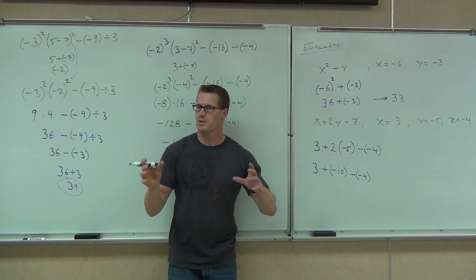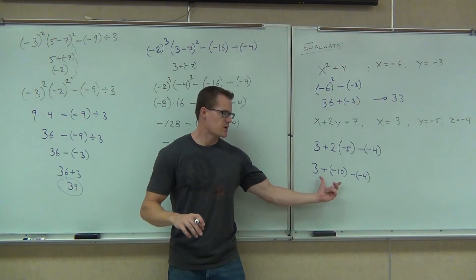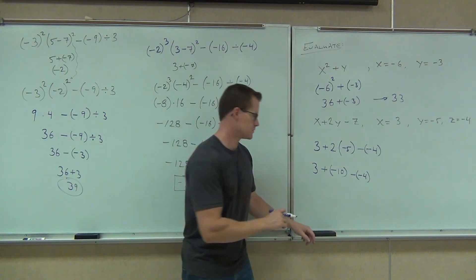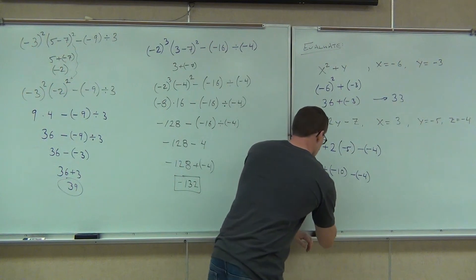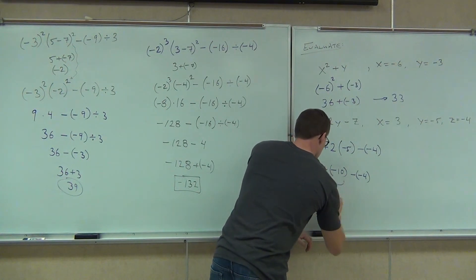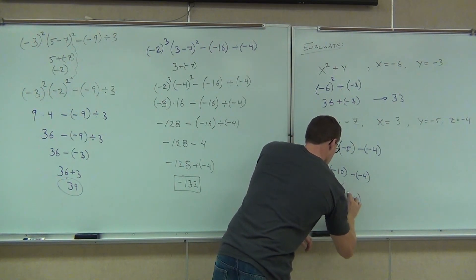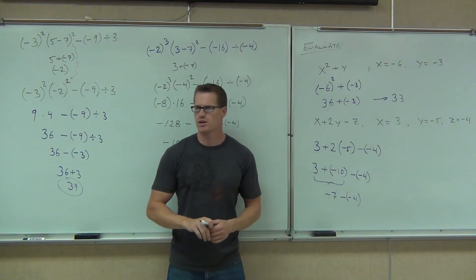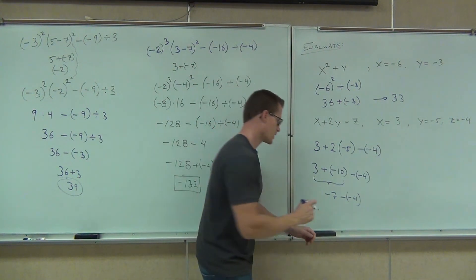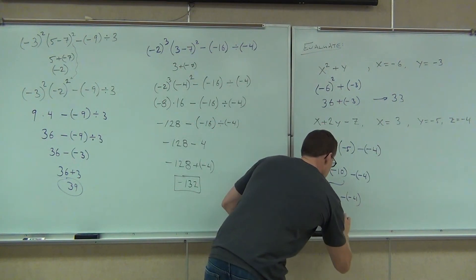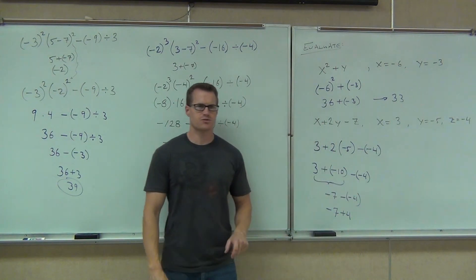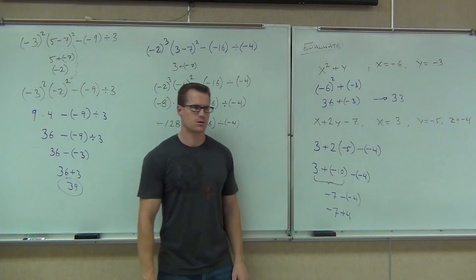And now we go step by step from the left. 3 plus negative 10 — everybody, how much is that? Negative 7. What are we going to do with that minus negative? What does that change to? Plus. Negative 7 plus 4 — what's negative 7 plus 4? Negative 3.